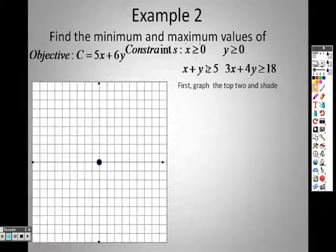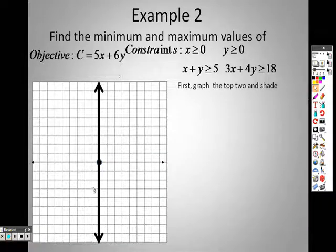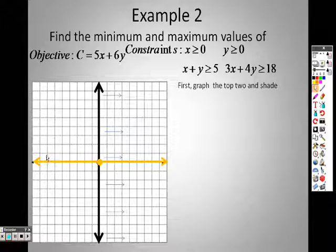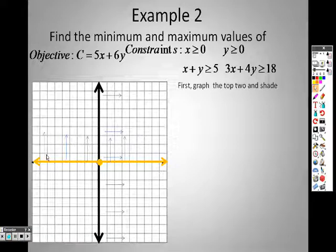We're going to graph the first two. X is greater than or equal to 0. You're already probably getting used to this one. There's that line right there. And I pick a point not in the line like 0, 0, and we realize that it goes in this direction. Y is greater than or equal to 0. You probably already realize how that one's going to be shaded as well. When you plug in a point not in the line like 1, 1, 1 is greater than 0, so we know it's going to be in this area up in here.